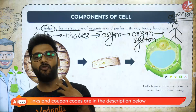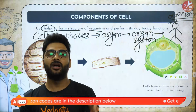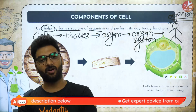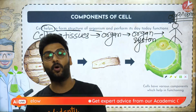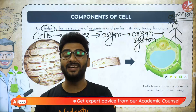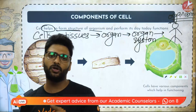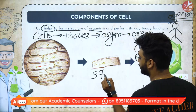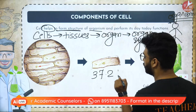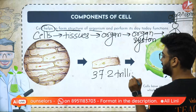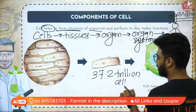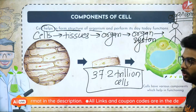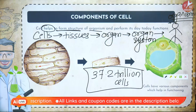What are we? We are nothing but a combination of 37.2 trillion cells. Some books say 35.2, some say 37.2 — but we are approximately 37.2 trillion cells in the human body.